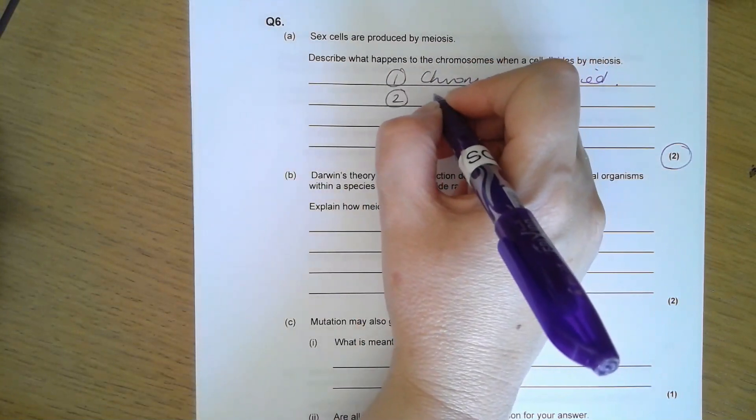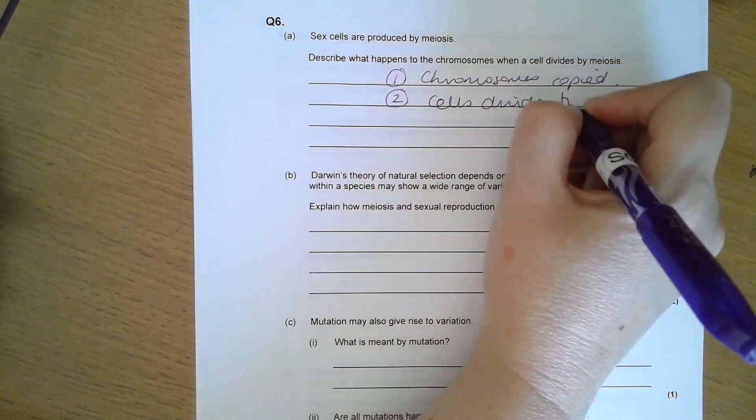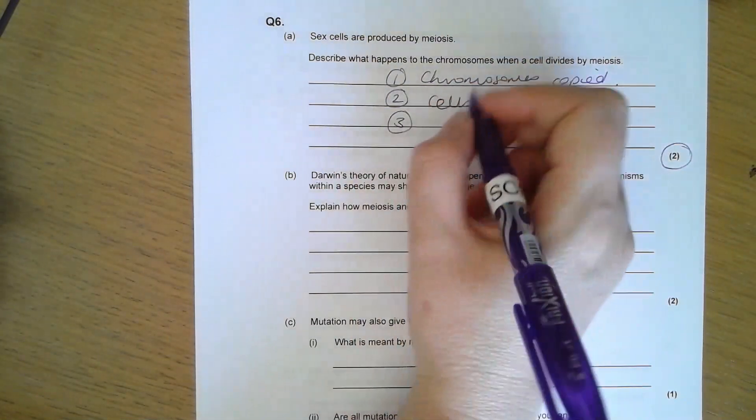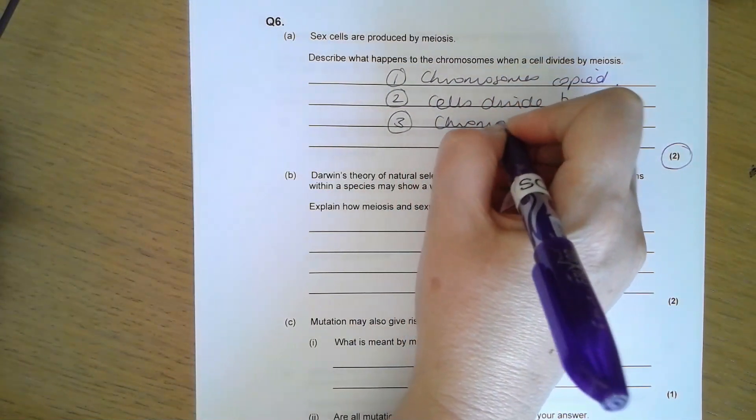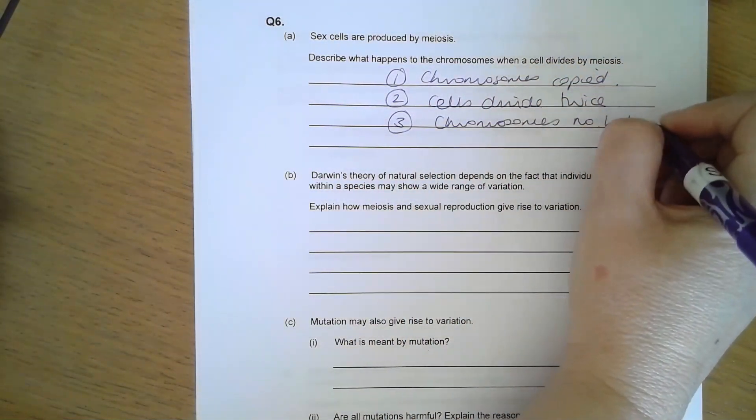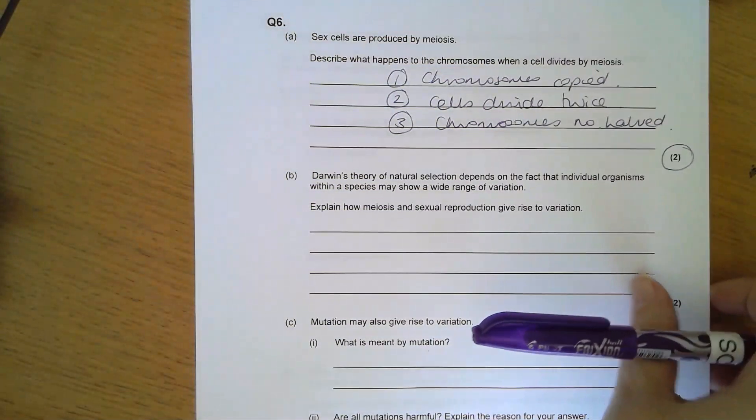You can have any two of these: In meiosis, the cells divide twice rather than just once in mitosis, and the chromosome number is halved, or you end up with cells with half the chromosome number.